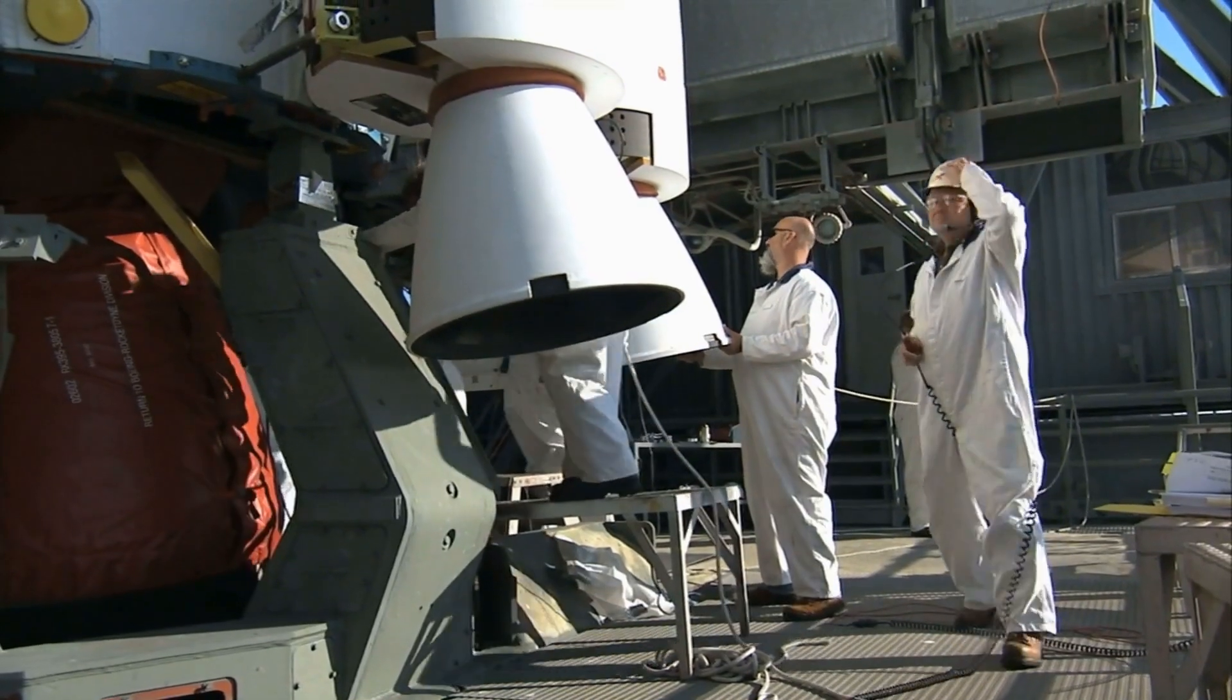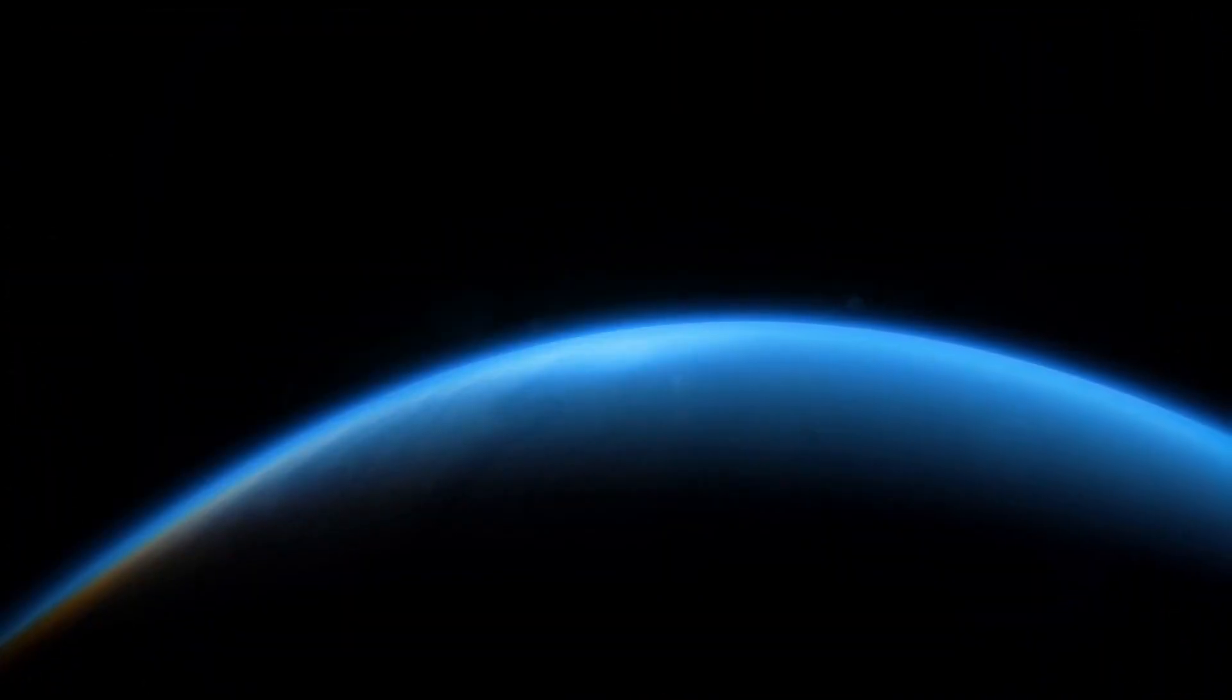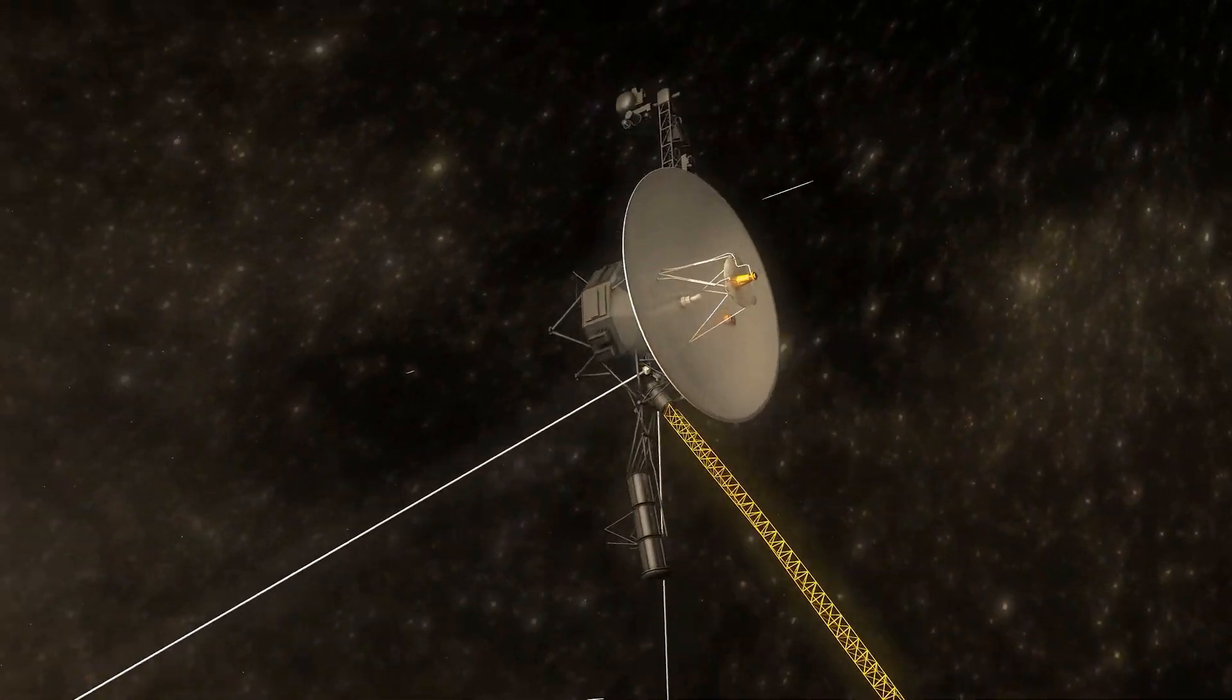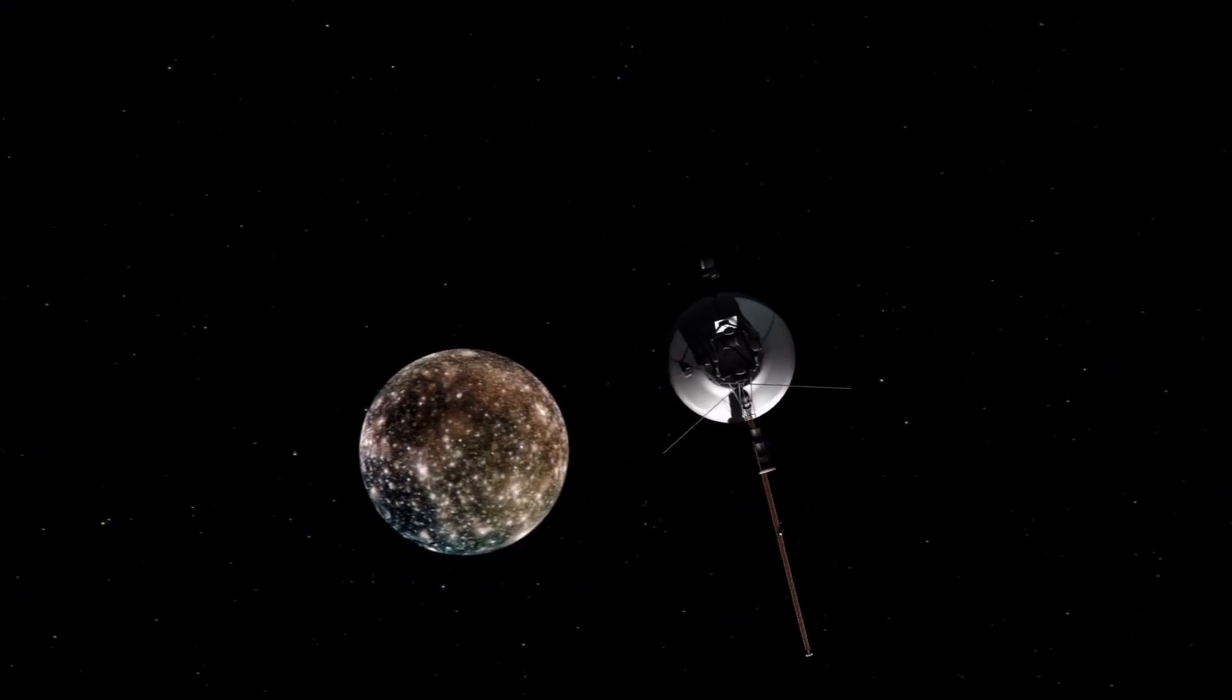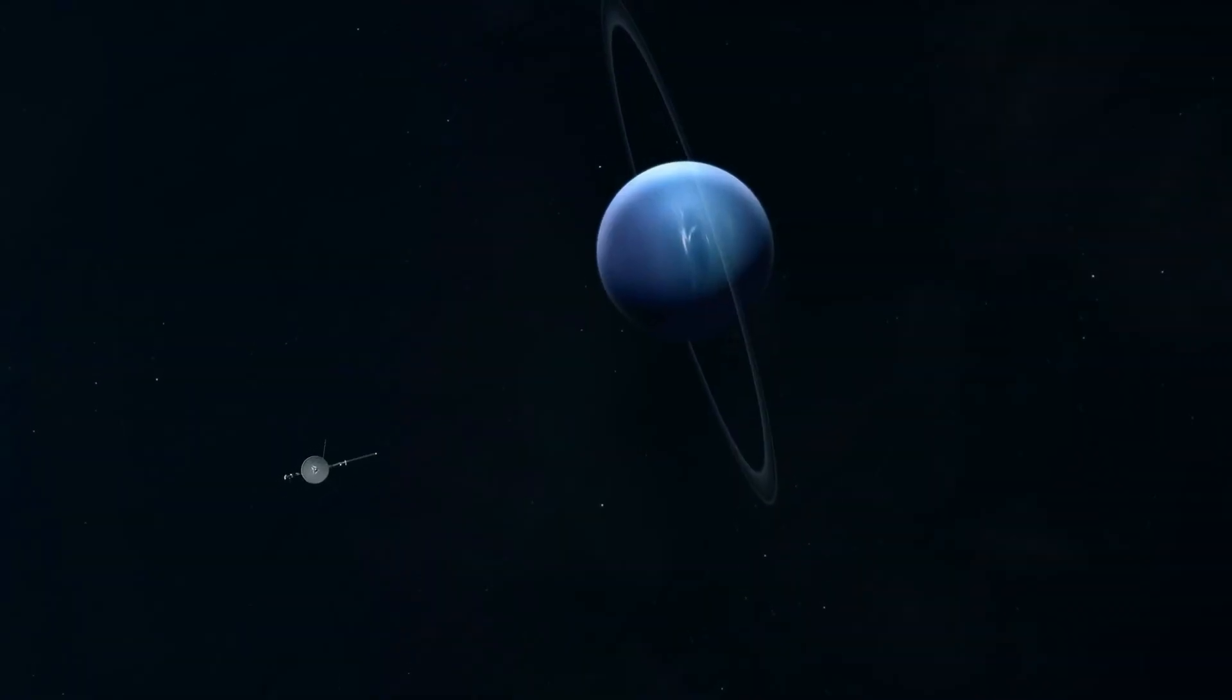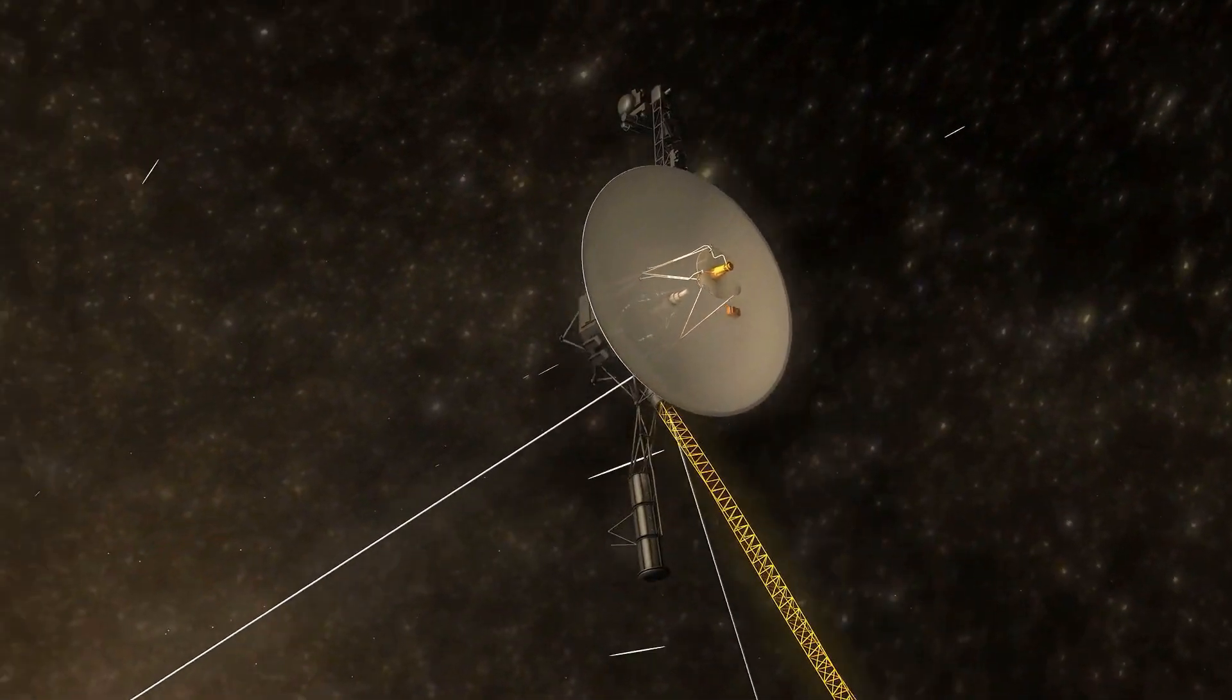These spacecraft were designed for a mere five-year mission to study the outer planets. Yet they've exceeded every expectation, continuing to send data from nearly 15 billion miles away. Capitalizing on a once-in-a-century planetary alignment, the Voyagers used gravitational slingshots to leap from one planet to the next. Voyager 1 focused on Jupiter and Saturn, while Voyager 2 became the only spacecraft to visit Uranus and Neptune. Each flyby offered discoveries that reshaped our understanding of the outer solar system, solidifying the Voyager's legendary status.